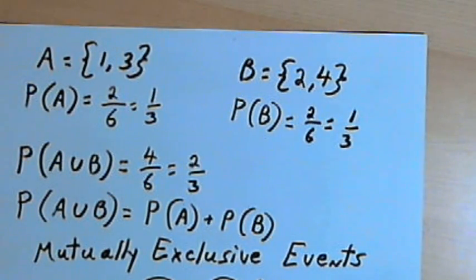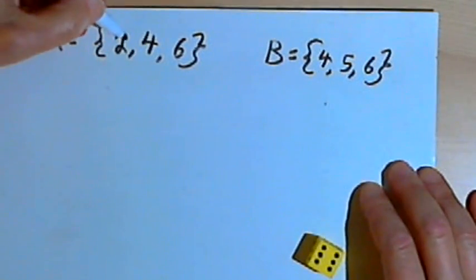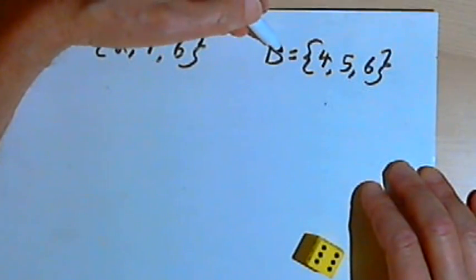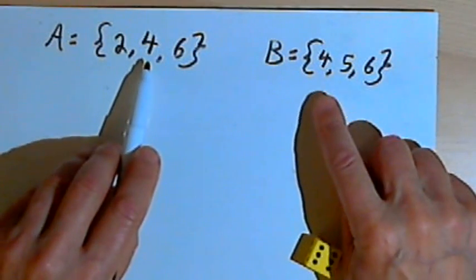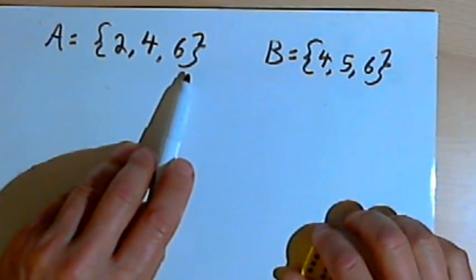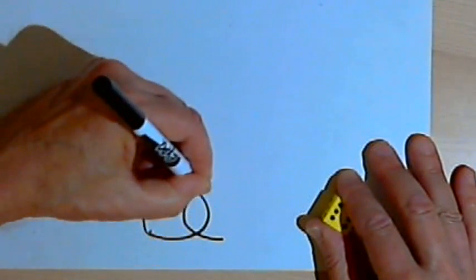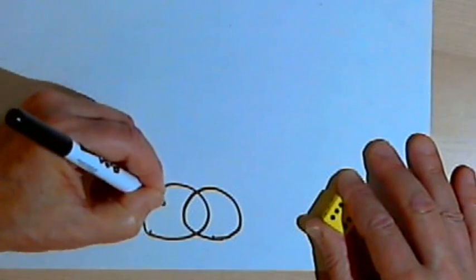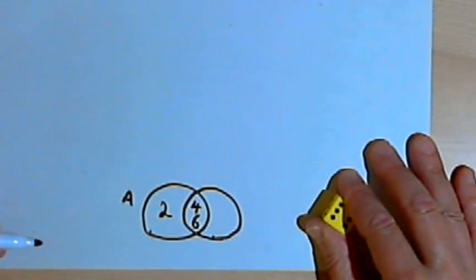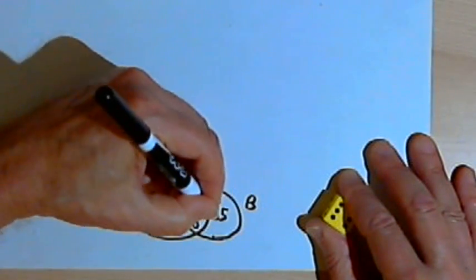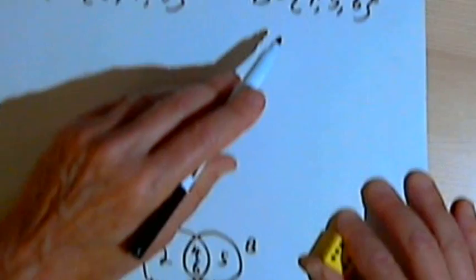Now let's compare that to a different situation. Event A is now 2, 4, or 6. Event B is throwing a 4, 5, or 6. Notice there's some overlap here — both events A and B have a 4 and a 6 in them. In terms of a Venn diagram, I'd have two overlapping circles. Event A has a 2, and then in the overlapping area there's a 4 and a 6, because event B is 4, 5, and 6.